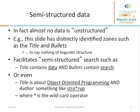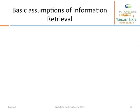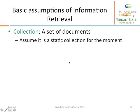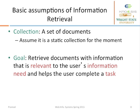Here are the two assumptions that we make for the information retrieval system we discuss. We talk about a set of documents called collections and we assume that this collection is static. The goal is to retrieve information as needed by the user.